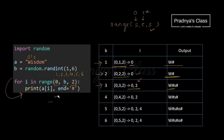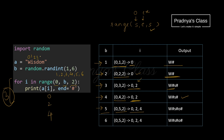If B is 4, range(0, 4, 2) gives 0 and 2 — same output as B=3: 'W# S#'. If B is 5, range(0, 5, 2) gives 0, 2, 4 — the loop executes three times. Based on those indices, we get 'W#', 'S#', and 'O#'. For B is 6, range(0, 6, 2) gives the same values 0, 2, 4 — so we get the same output 'W# S# O#'.